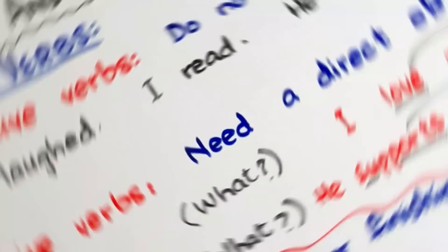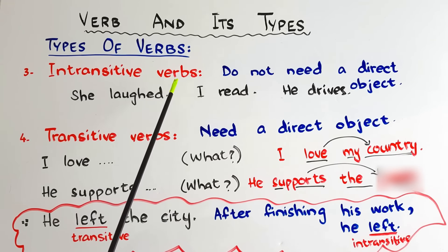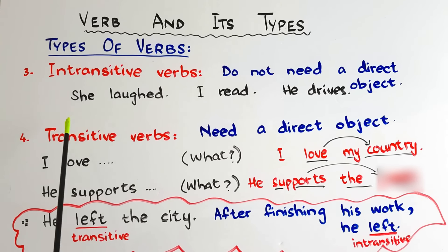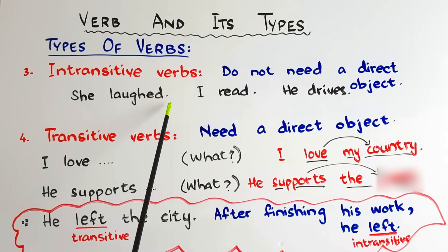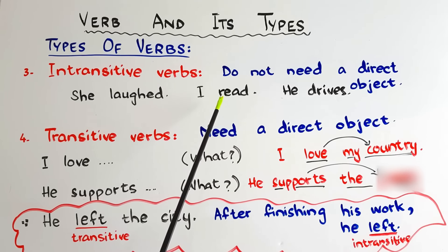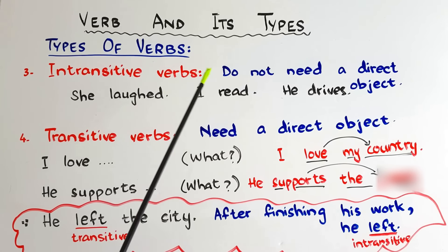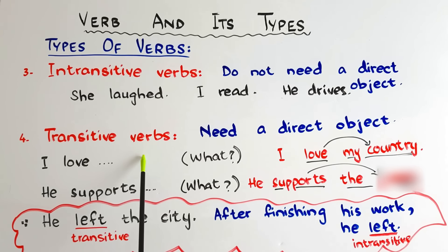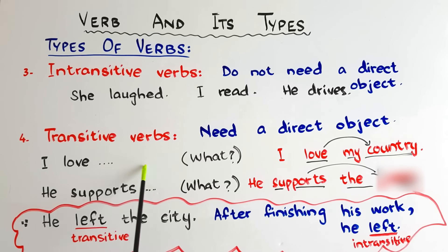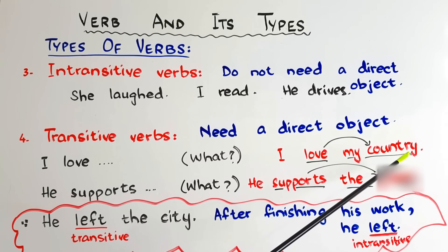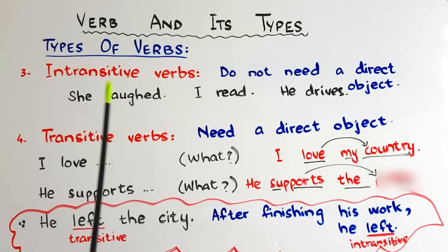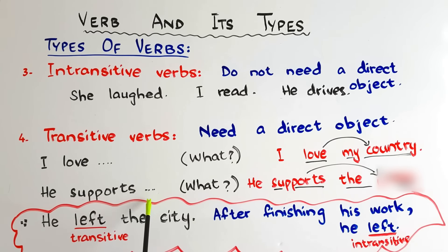Now let's move on to intransitive and transitive verbs — these are quite simple. Intransitive verbs do not need a direct object. Like 'she loved' — that is a complete thought, a complete sentence. 'I read,' 'he drives' — in these sentences we do not need a direct object. However, transitive verbs do need a direct object after the verb. Like 'I love' — I love what? I need an object, so the sentence is incomplete. 'I love my country' — now it is complete.